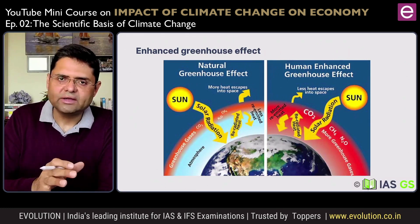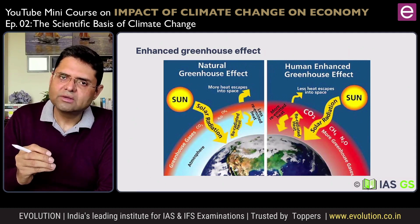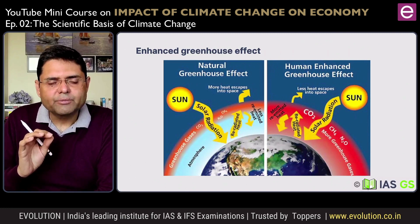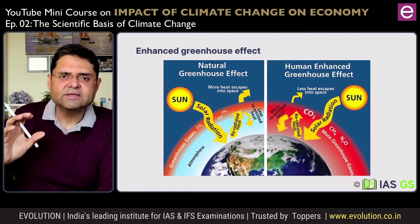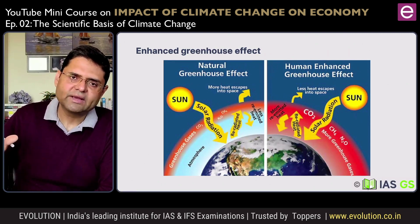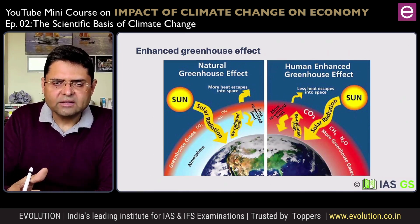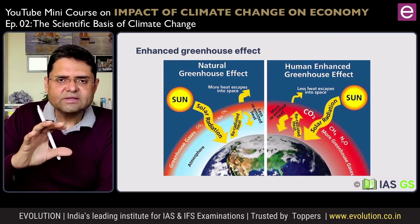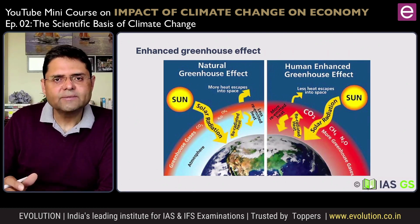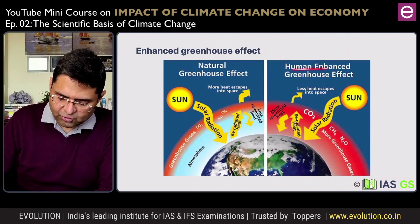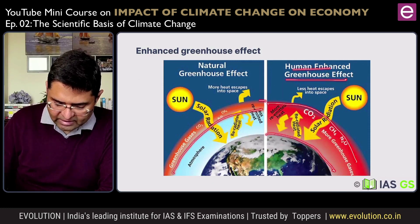If we remove this greenhouse effect totally by imagining that all the greenhouse gases from the atmosphere have been removed, the earth will be too cold to support life forms. The problematic greenhouse effect is called the enhanced or accelerated greenhouse effect, in which the density of greenhouse gases is significantly increased because of human activities — mainly the burning of fossil fuel, cutting of forests, and other activities like cattle rearing and certain types of farming which release methane. All these activities combined have increased greenhouse gases in the atmosphere, intensifying the greenhouse effect and accelerating the rise in temperature. In the graphic, the human-enhanced greenhouse blanket is shown as quite thicker compared to the natural one.